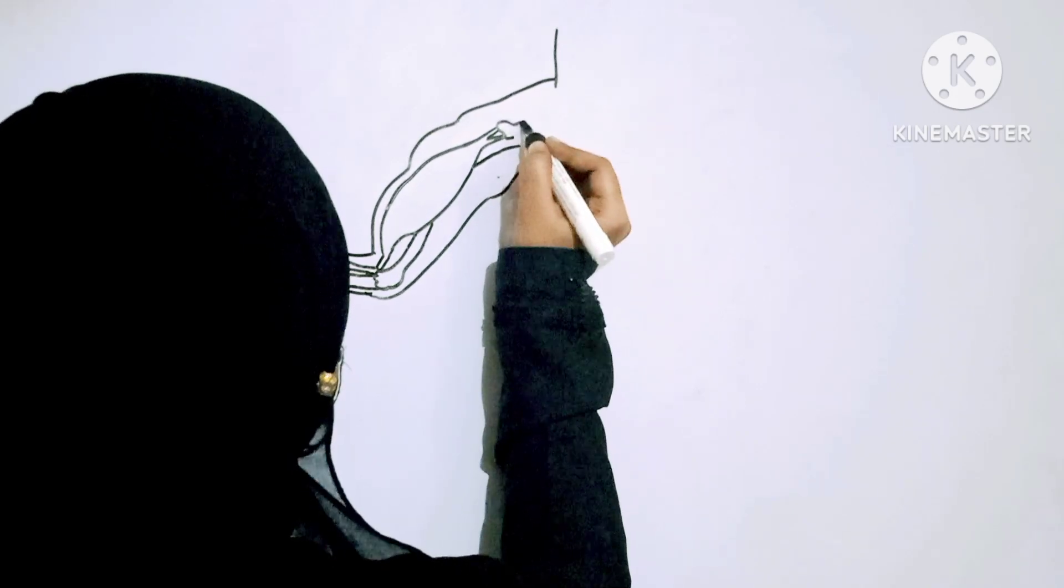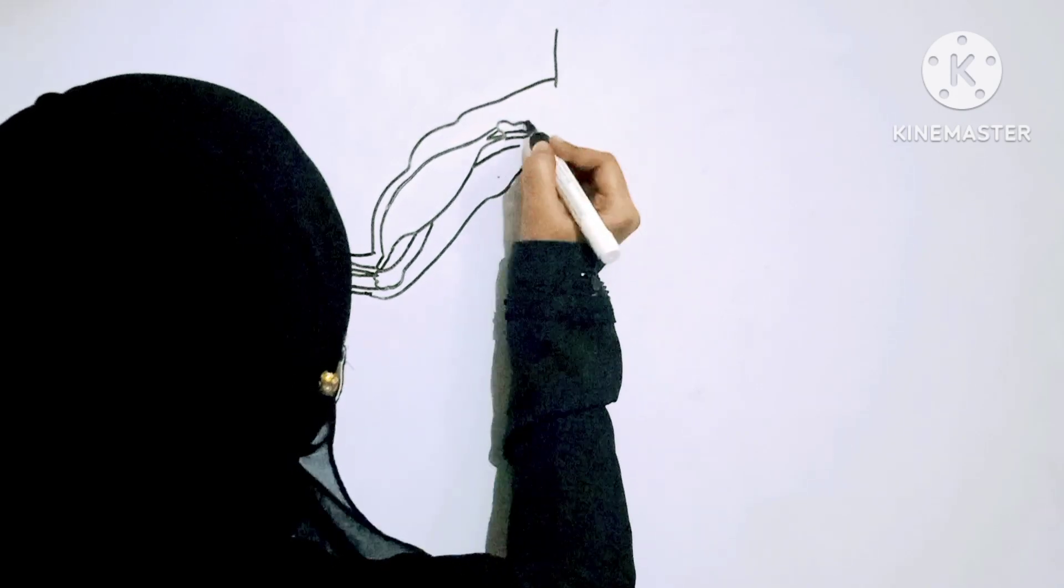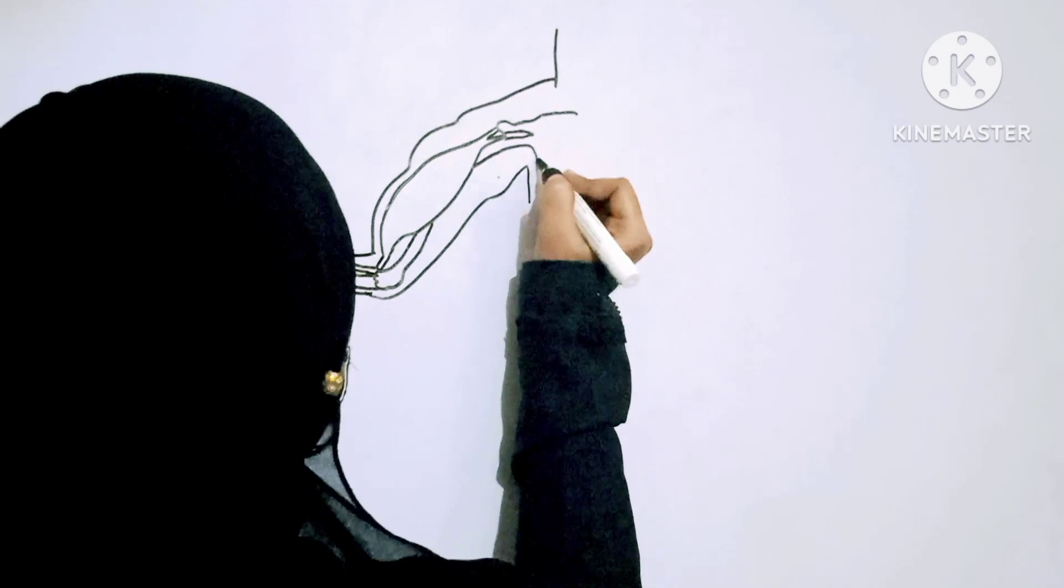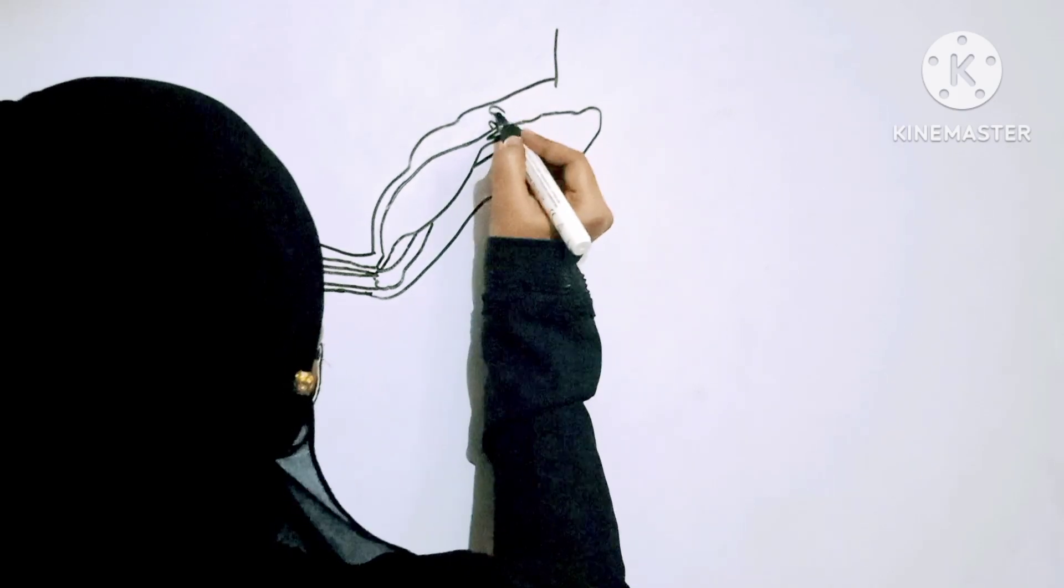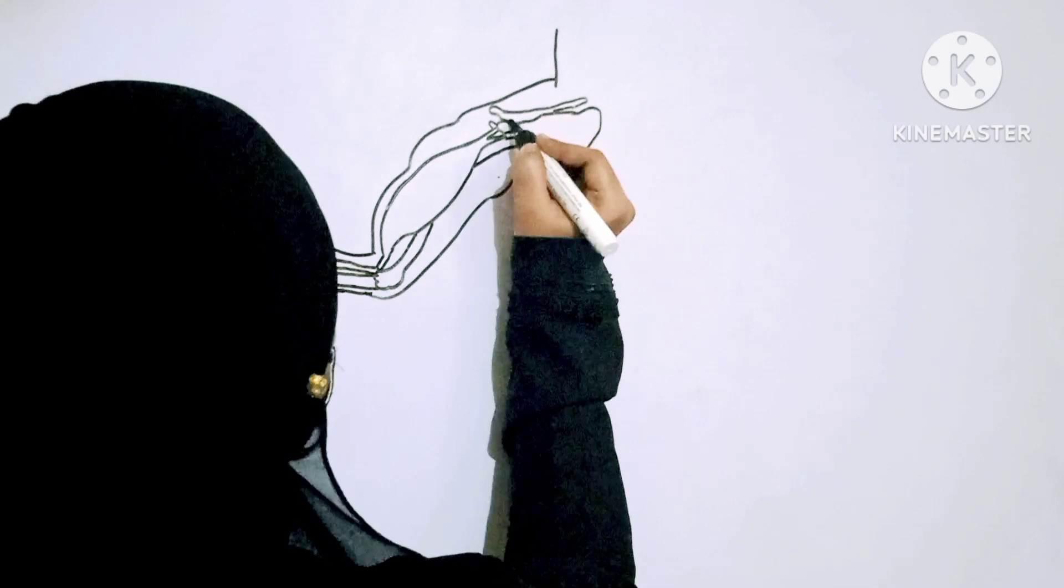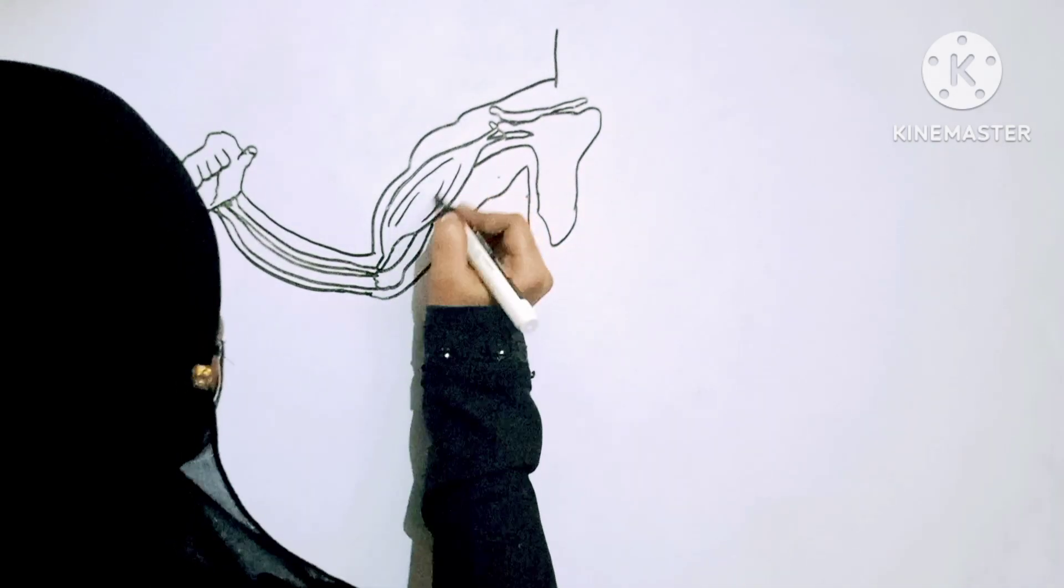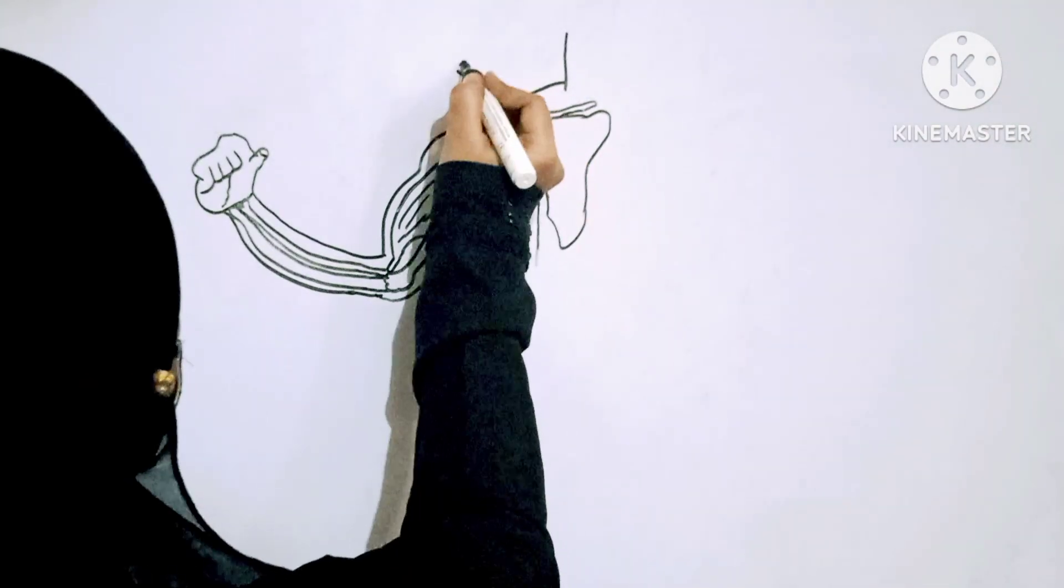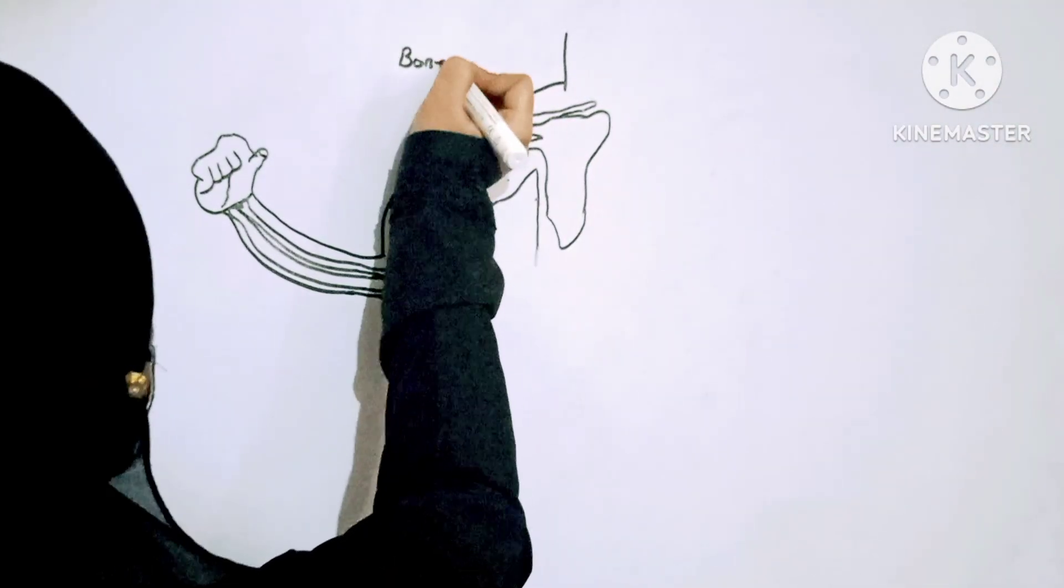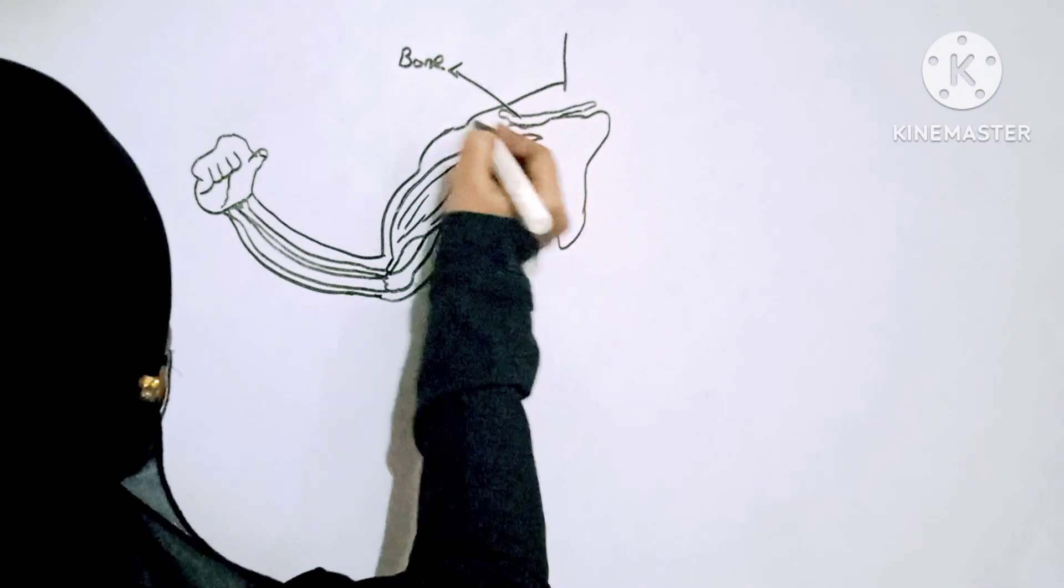By attaching muscle to bone, when muscles contract, the tendons act on the bone causing movement. Joints, the point at which two or more bones connect, can be fixed, slightly mobile, or freely mobile.